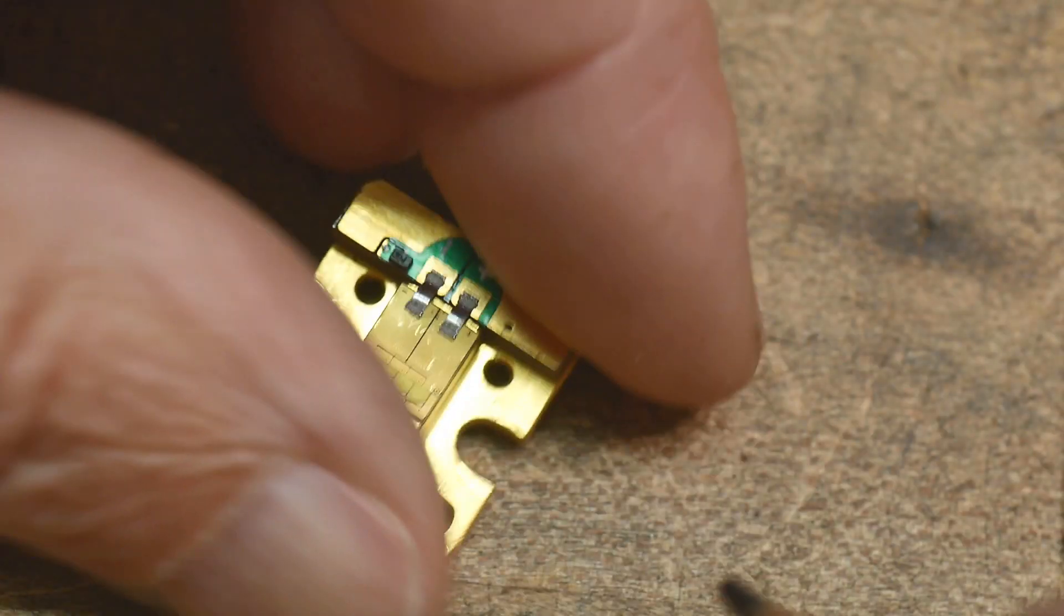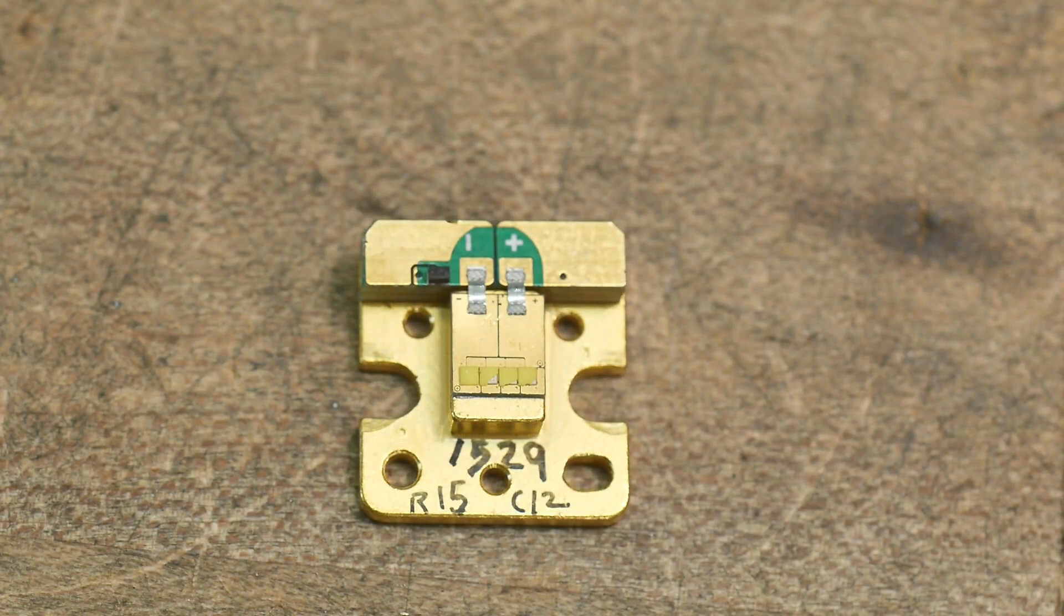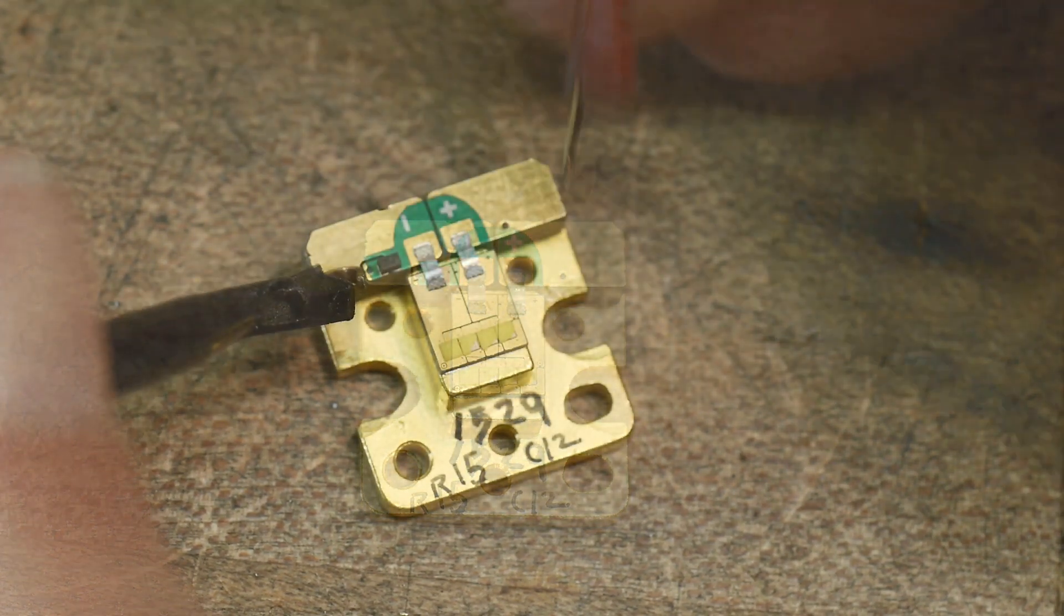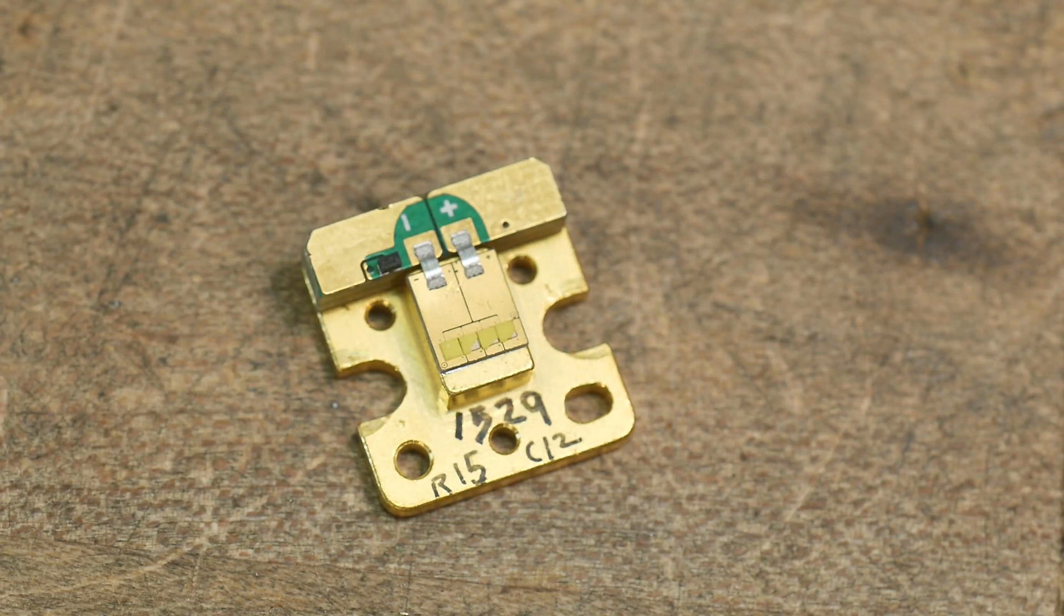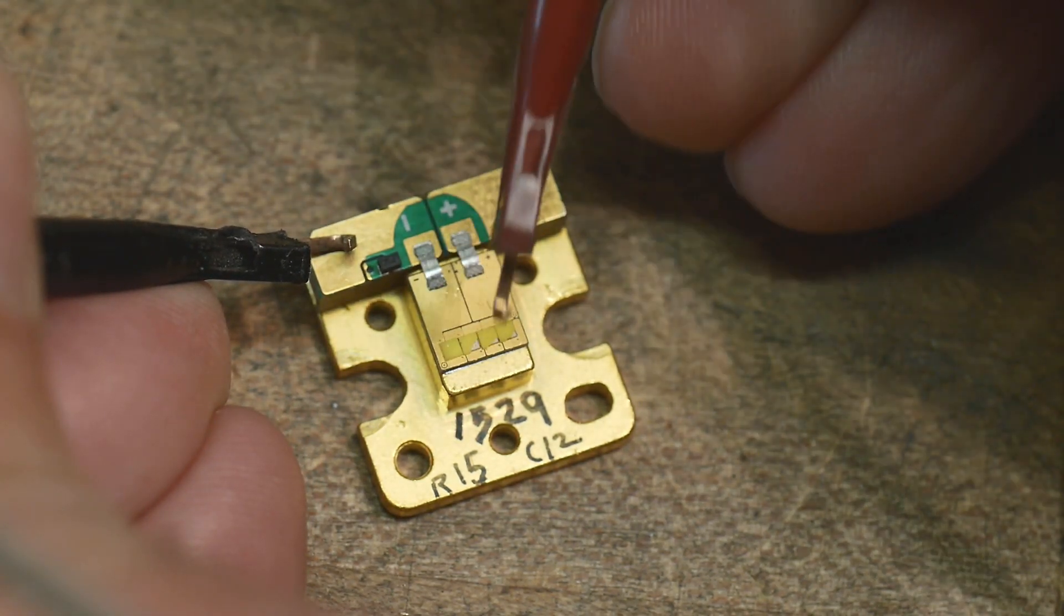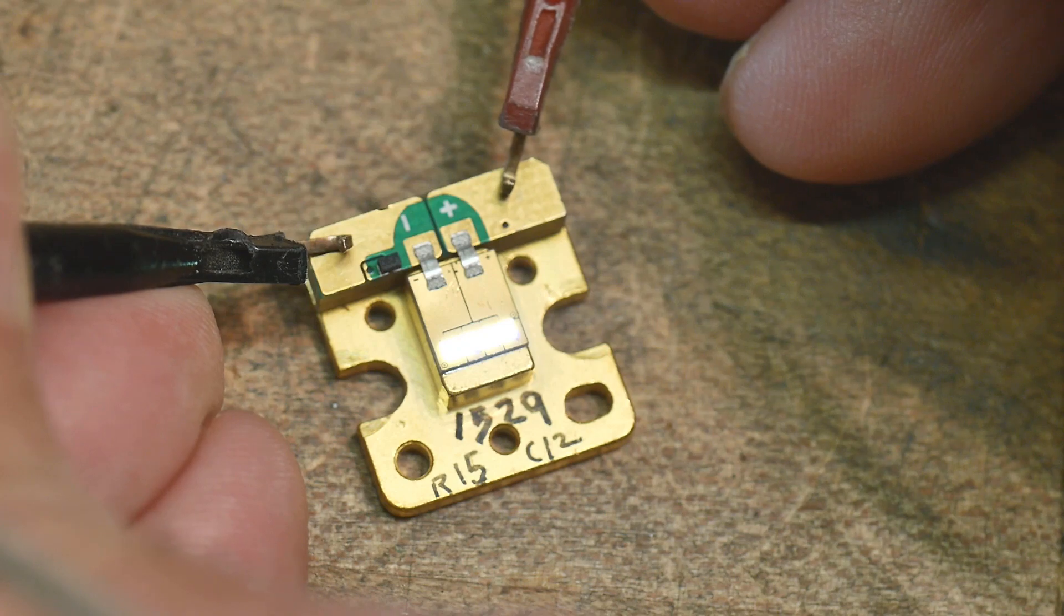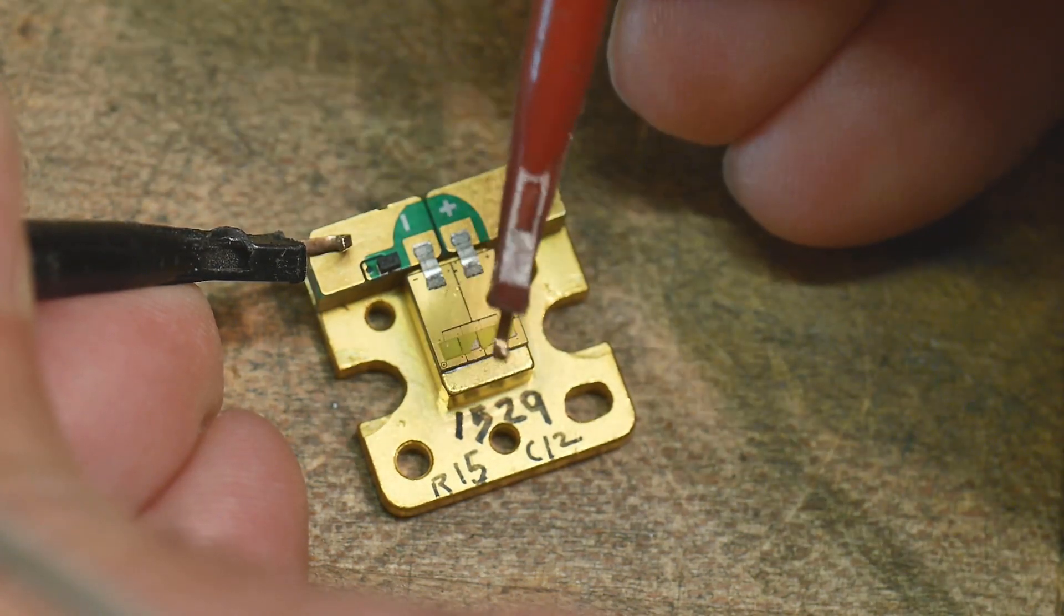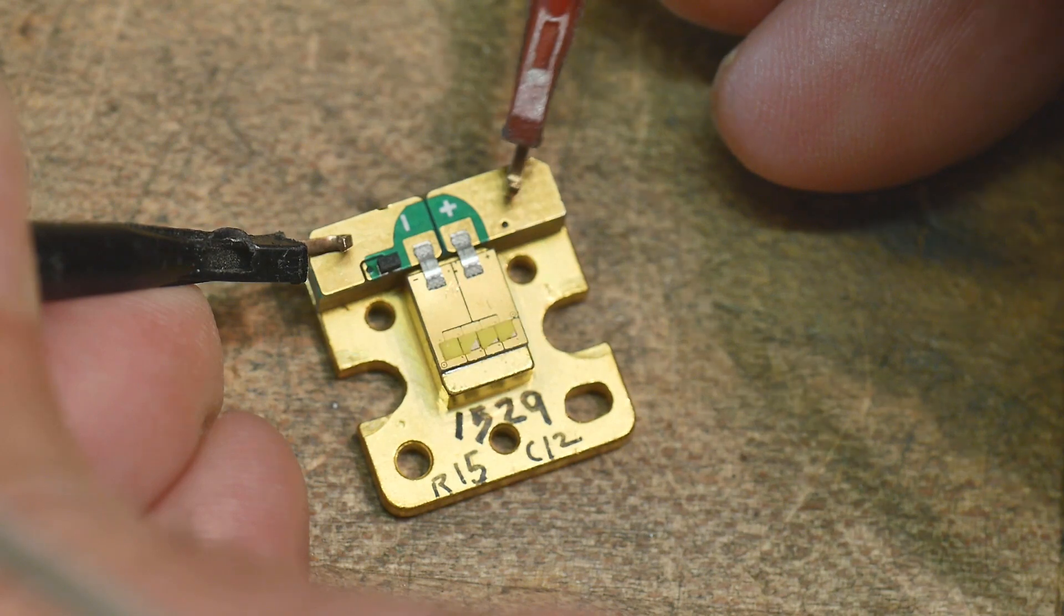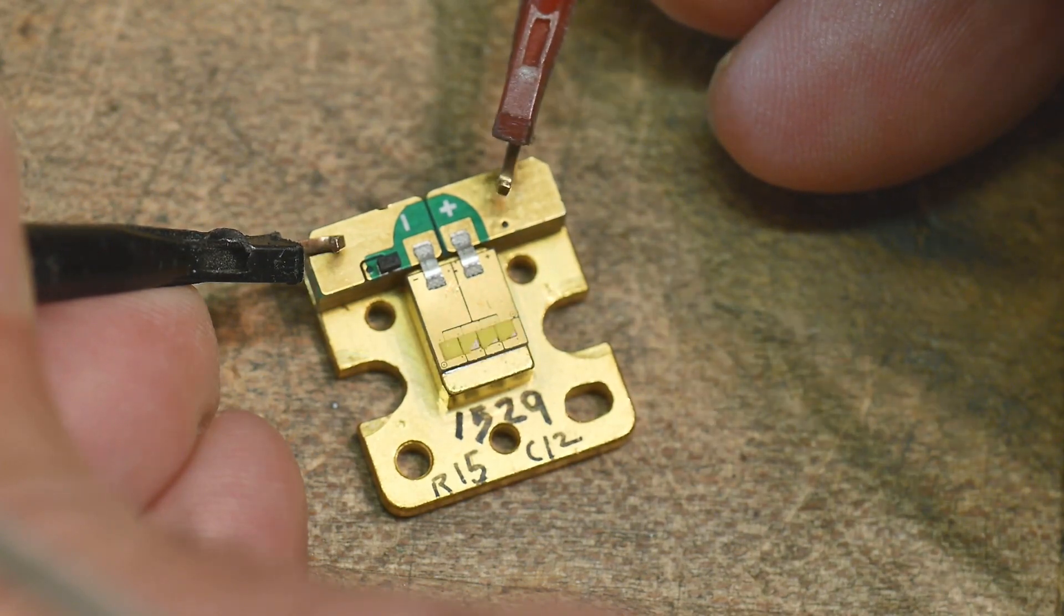And then the LED, so this is all gold in here. The LEDs are right here. There's four of them: one, two, three, four. Let me see if I can light this thing up so you know which ones are the LEDs.